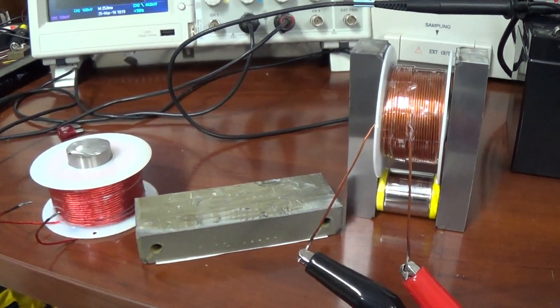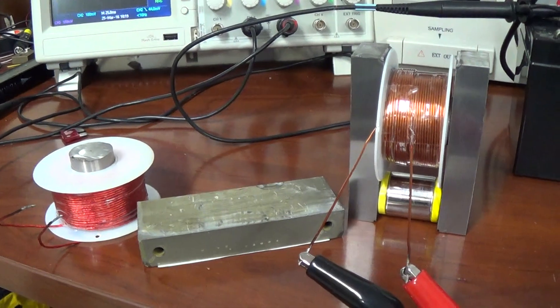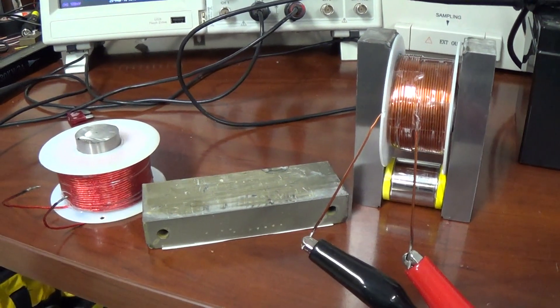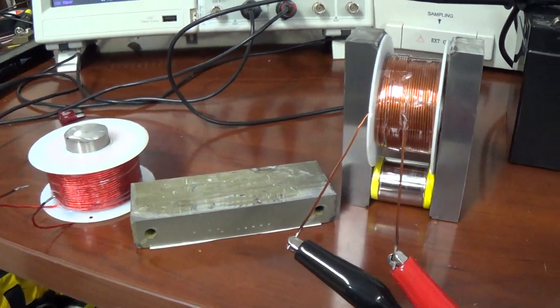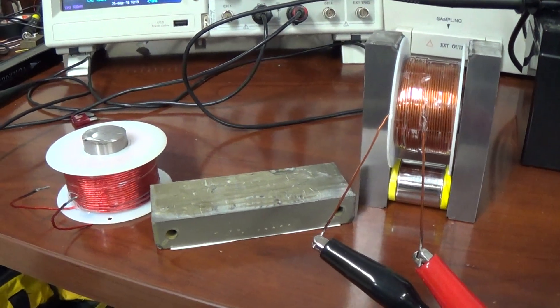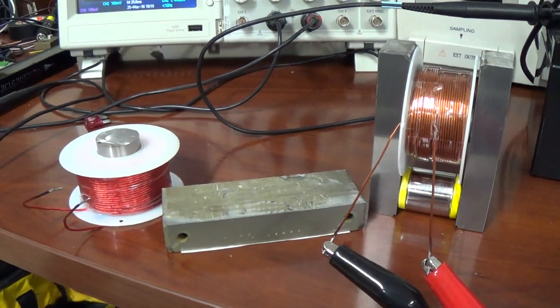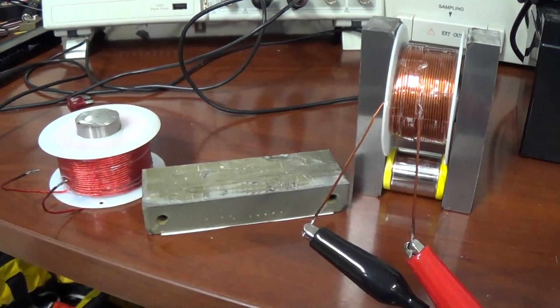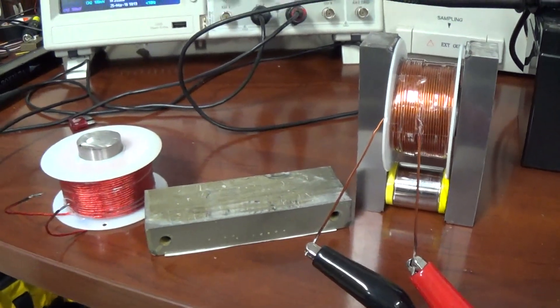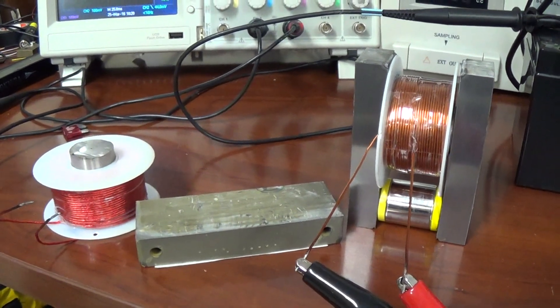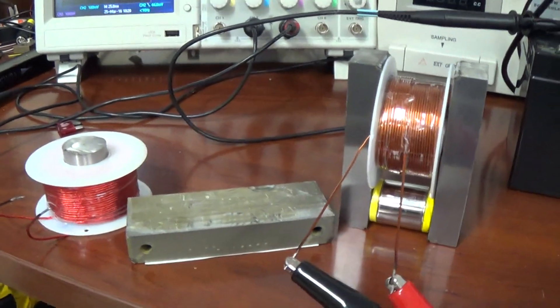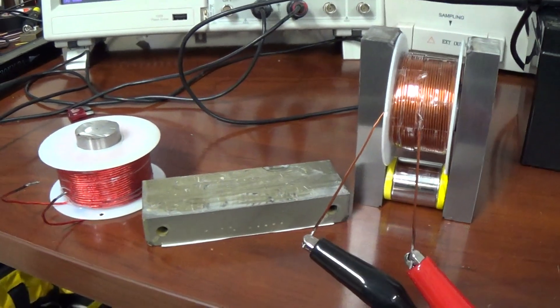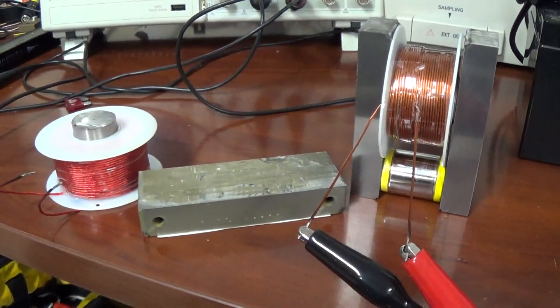His concept is basically a motor that would be utilizing magnetization and demagnetization of an Alnico magnet. Now what I'm going to share is my own version of it, possibly a simpler version, and maybe one that Robert himself would like to consider. This is how I went about it.